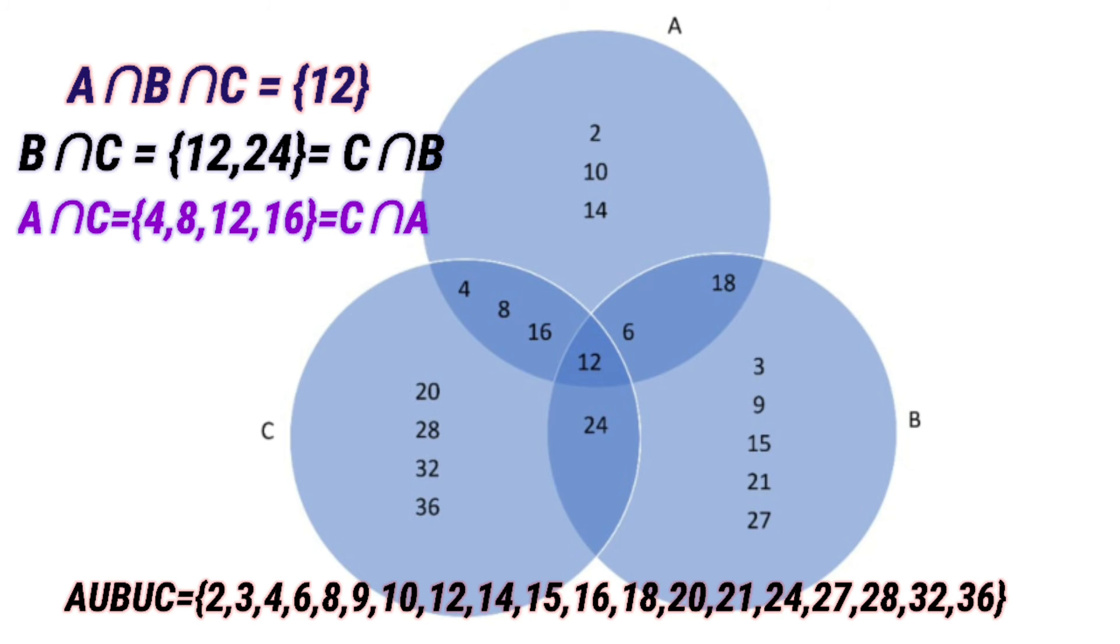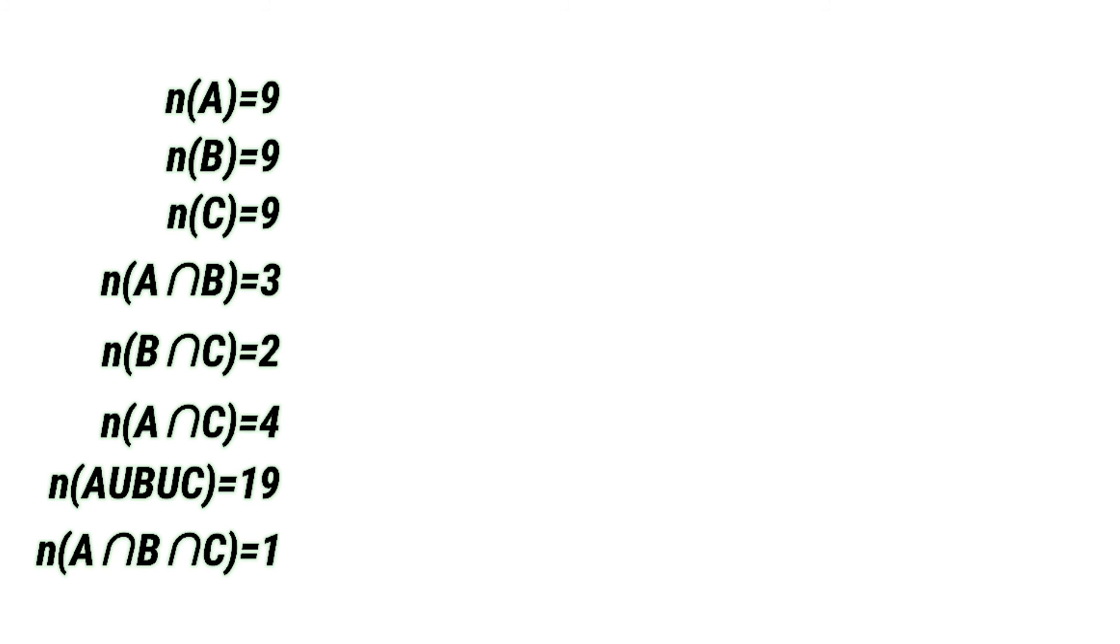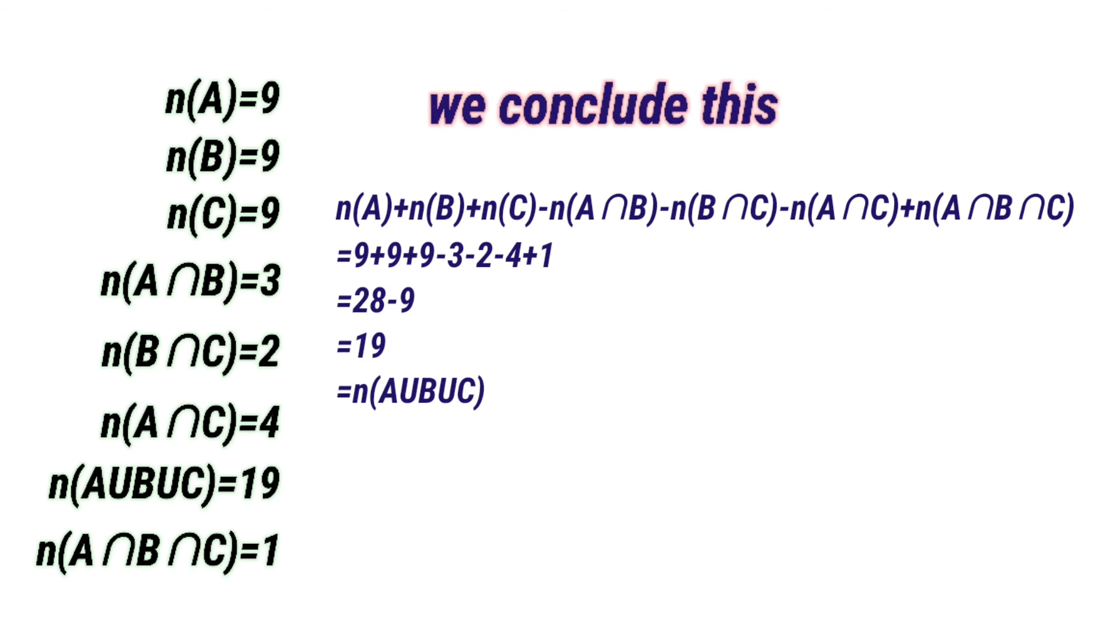And A union B union C is calculated like this. So, we calculate the number of elements in all sets. We conclude that n of A plus n of B plus n of C minus n of A intersection B minus n of B intersection C minus n of A intersection C plus n of A intersection B intersection C equals n of A union B union C.